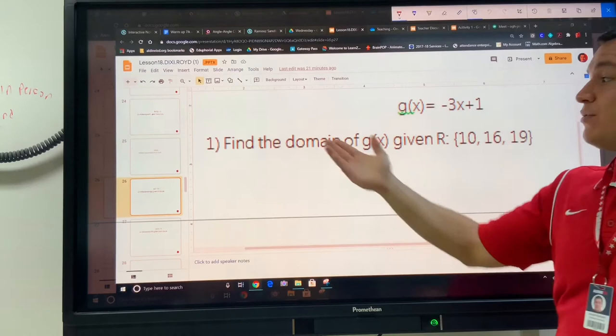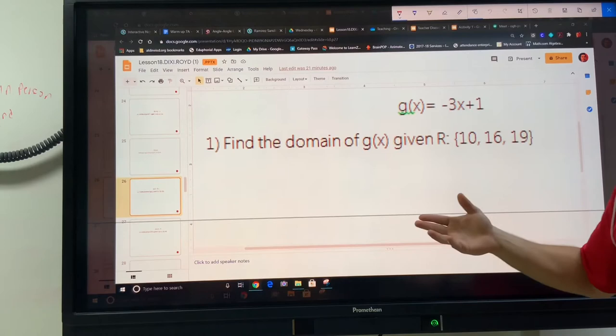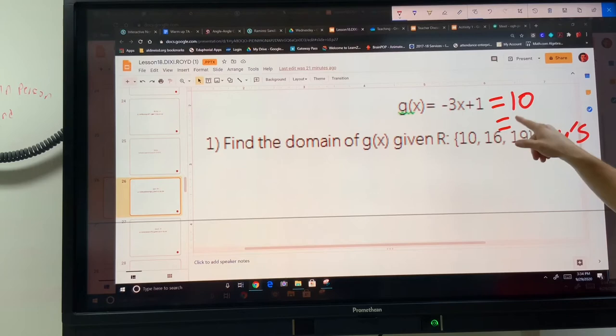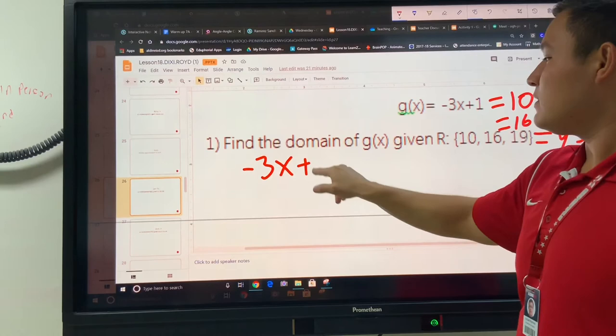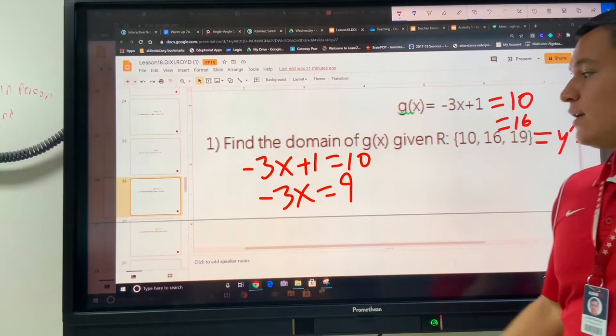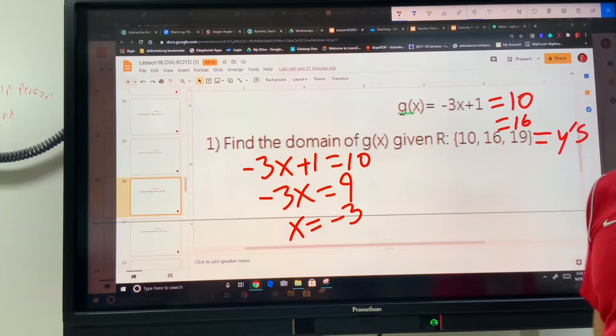Now let's do the reverse of that. Let's find the domain if they give you the range. If they gave you the range, they didn't give you the x's, they gave you the y's. If these are the y's, then these are the answers. You're going to put a 10, 16, and 19. So negative 3x plus 1 equals 10. We're going to solve this. We're going to subtract 1 from both sides to get negative 3x equals 9. Then we're going to divide by negative 3 to get x equals negative 3.